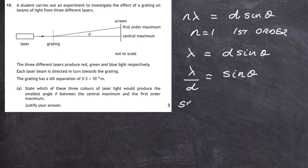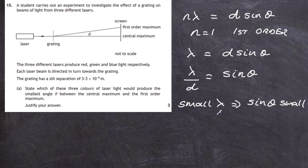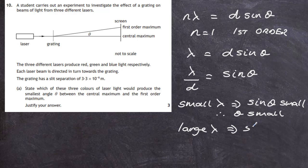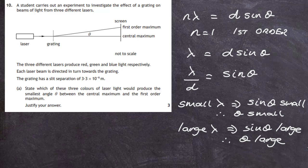From the equation sin θ = λ / d, we can see that a small wavelength λ implies sin θ is small, and therefore θ is small. Conversely, a large wavelength implies sin θ is large, and therefore θ is large. So depending on which colour or wavelength we use, we're going to get different angles.